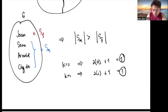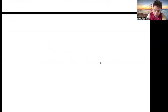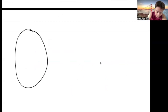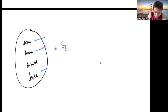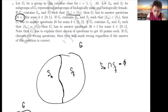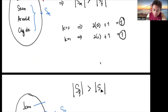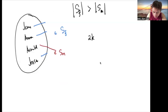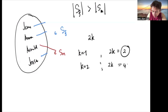What happens when the cardinality of S_F is greater than S_M? For example, if we have Gene, Anna, and Arnold in S_F, and only Arnold in S_M, then the cardinality of S_F is greater than S_M. According to the instruction, you then answer 2K for some K from 1 to 2. When K=1, 2K=2; when K=2, 2K=4. So you answer questions 2 and 4.